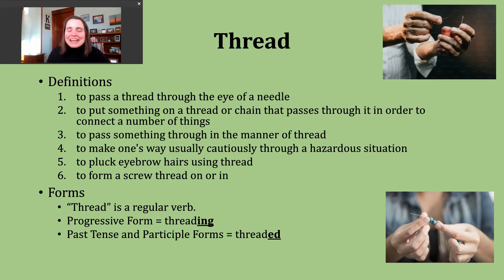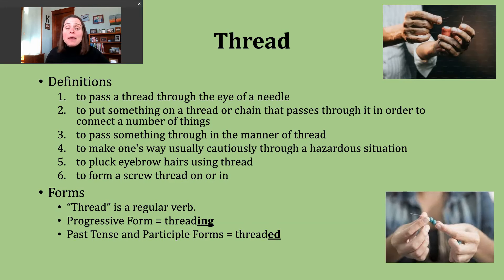A sixth way thread gets used is to mean to form a screw thread on or in something — we might hear this used in connection to bolts. You should know that thread is a regular verb. To make the progressive form, just add -ing to form threading. The past tense and participle forms are made by adding -ed. Our base verb thread ends in a D sound, so when we add the -ed ending we make an ID sound, adding an extra syllable. The past tense and participle form should sound like this: threaded.